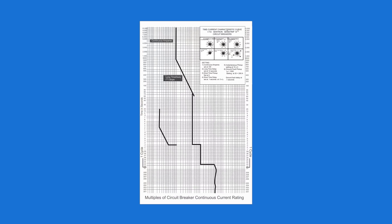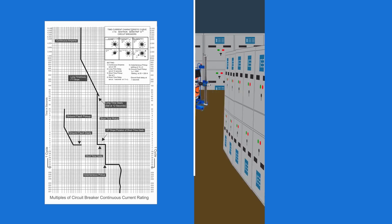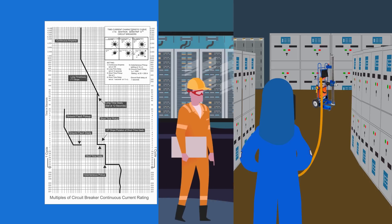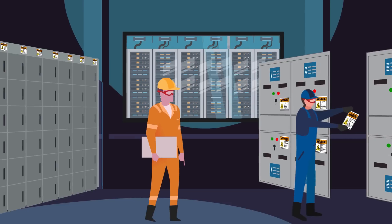Specify required PPE levels based on the existing electrical safety program in place for the facility. Identify areas where incident energy levels can be improved and provide settings changes and/or mitigation steps. Settings changes should be made while ensuring proper protective coordination.